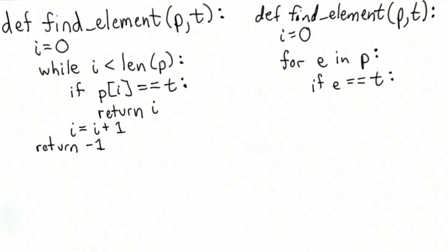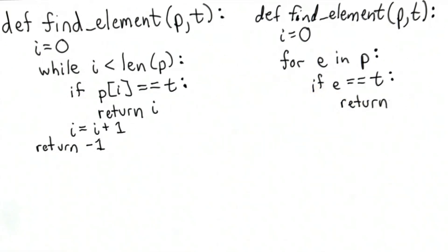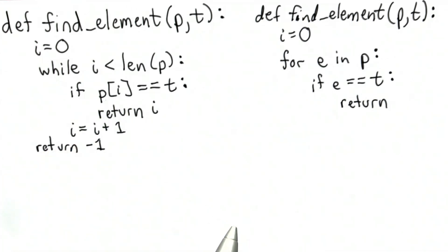So our test is using double equal to compare e and t. If they match, just like we did in the while version, we should return the result. The result we want to return is the index where we found the match. In the while version, that was clear. It made sense because we were looking at element p, index i.